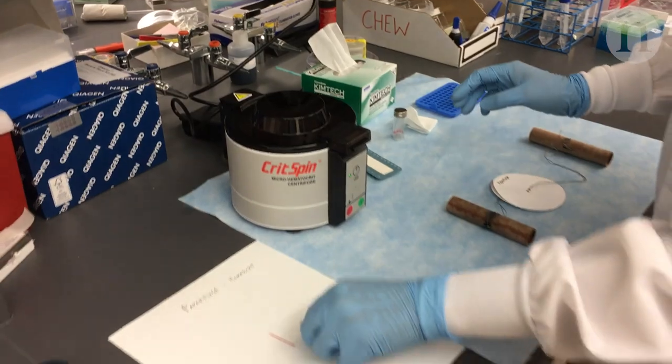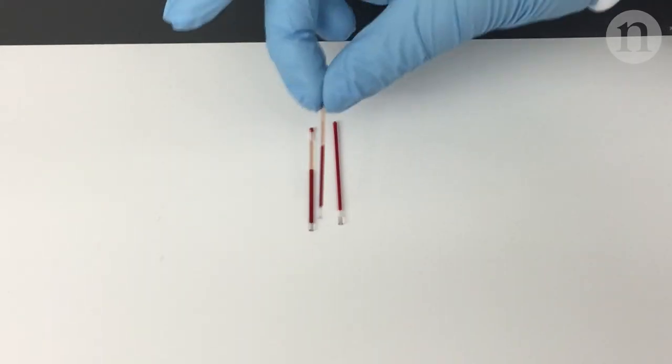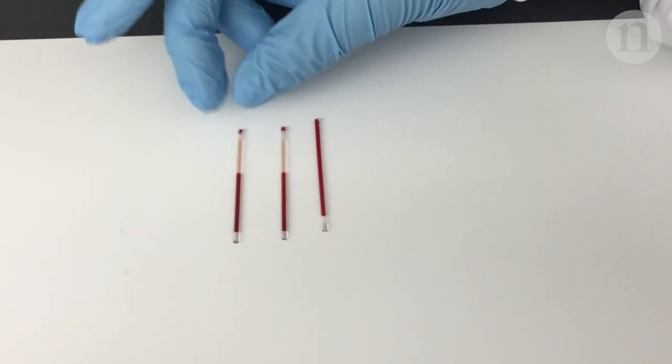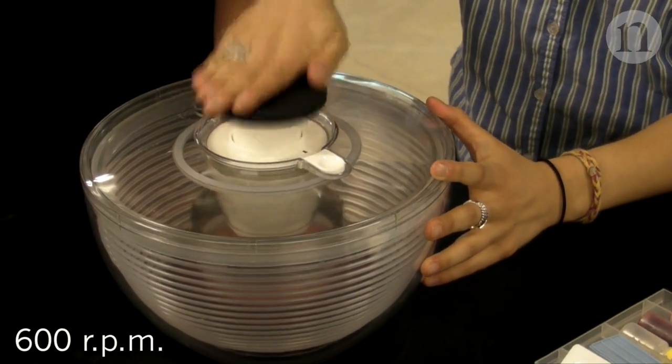In the quest for an affordable, electricity-free centrifuge, scientists have previously made use of a salad spinner but this design is relatively slow.